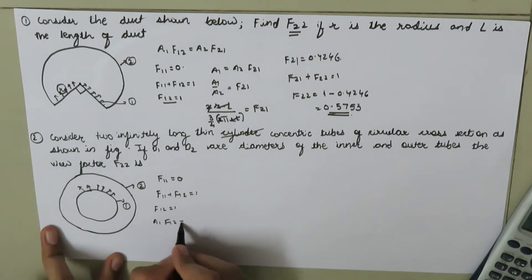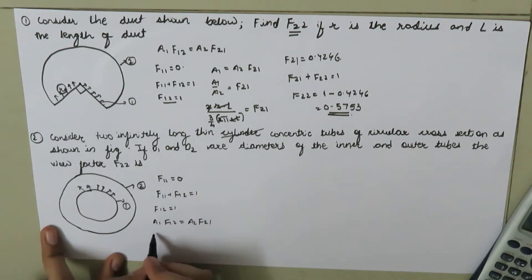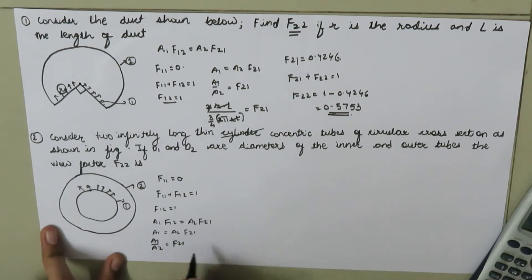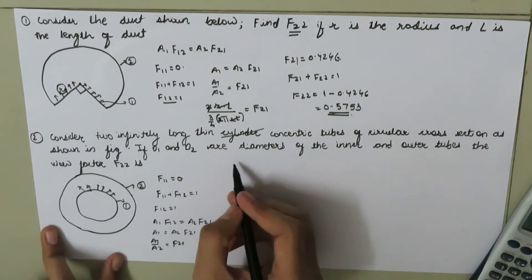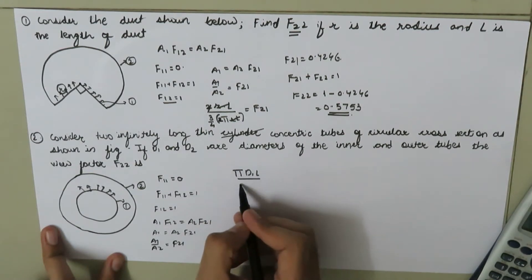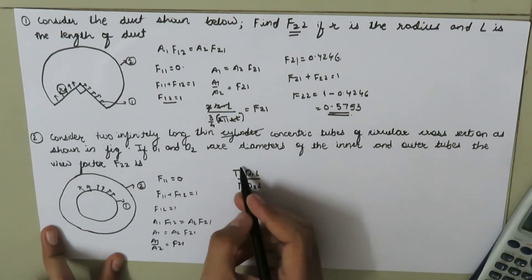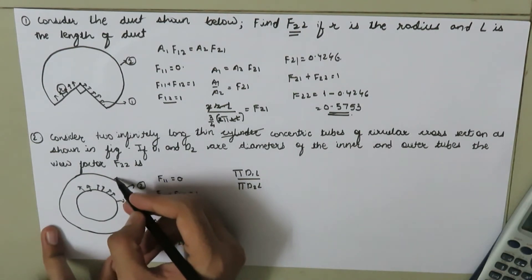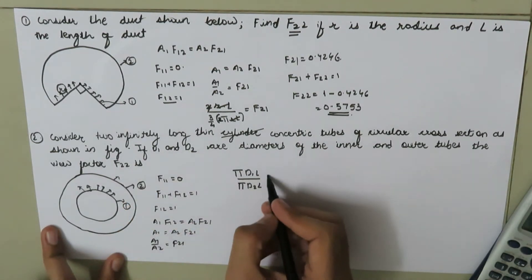By the reciprocity theorem, A₁ × F₁₂ = A₂ × F₂₁. Since F₁₂ = 1, we get A₁/A₂ = F₂₁. A₁ = πD₁L and A₂ = πD₂L, so F₂₁ = D₁/D₂. This uses the surface areas of the two cylinders since radiation is emitted along the surface area.